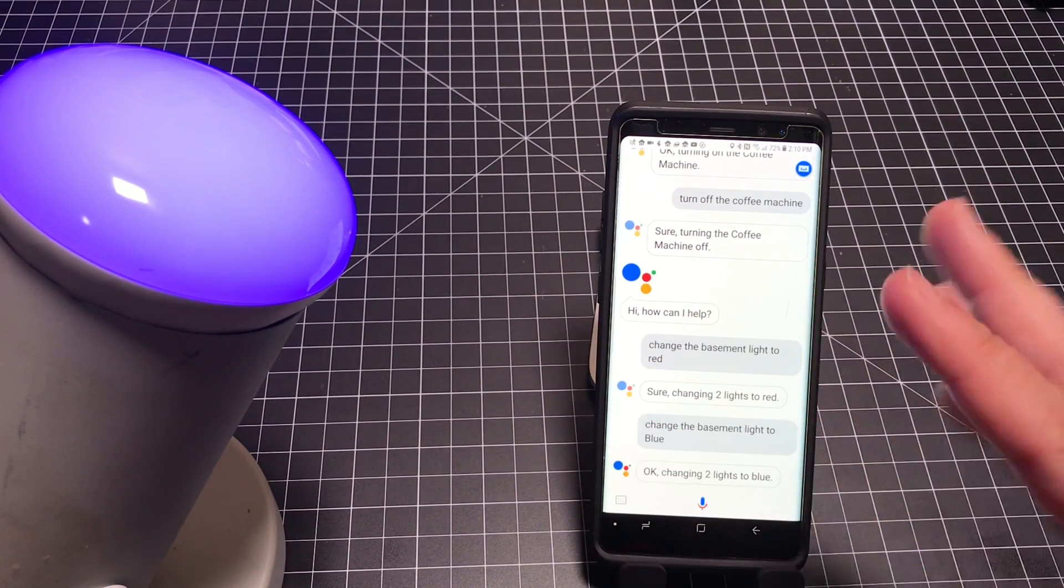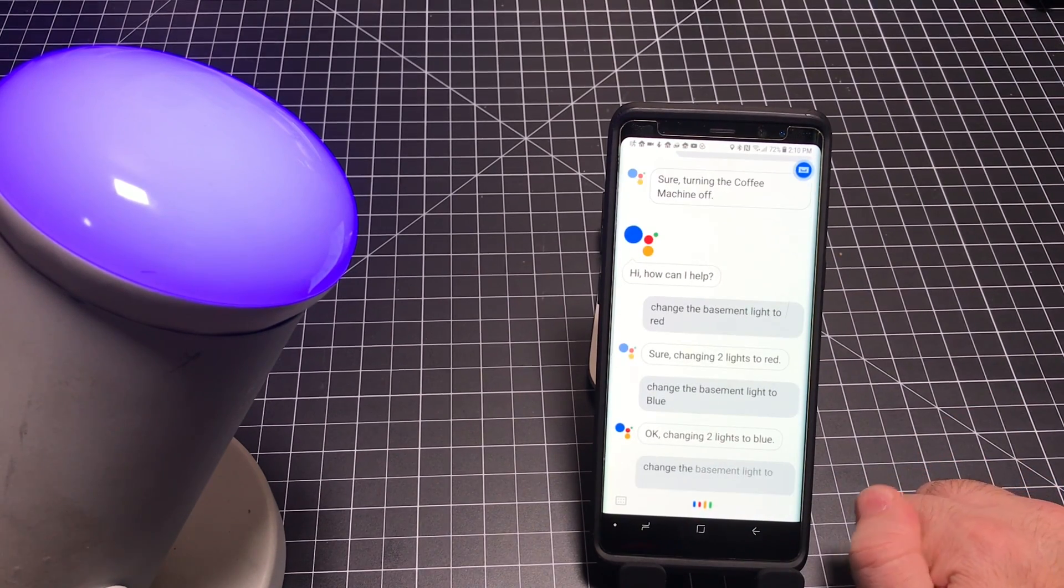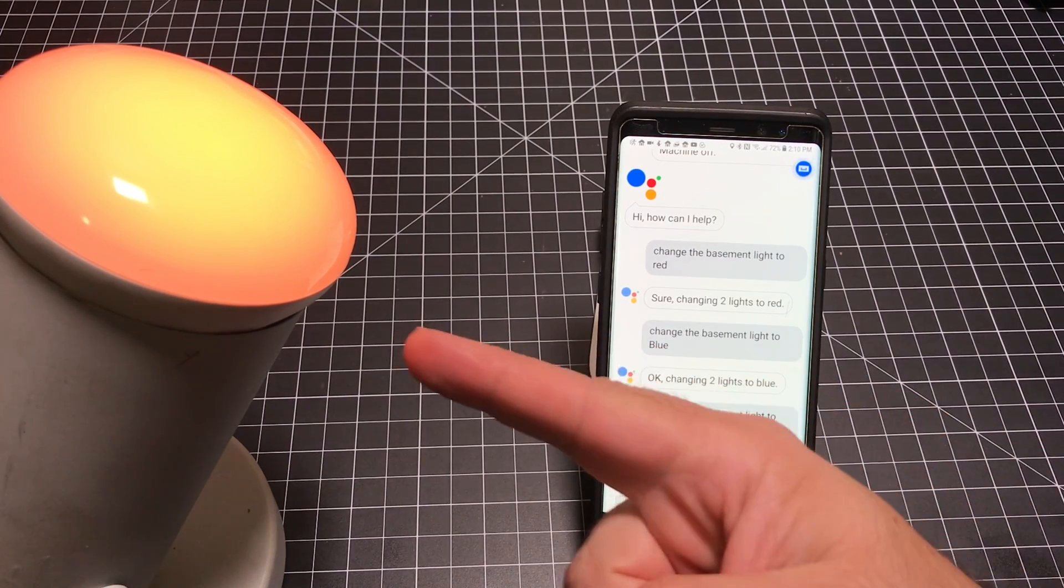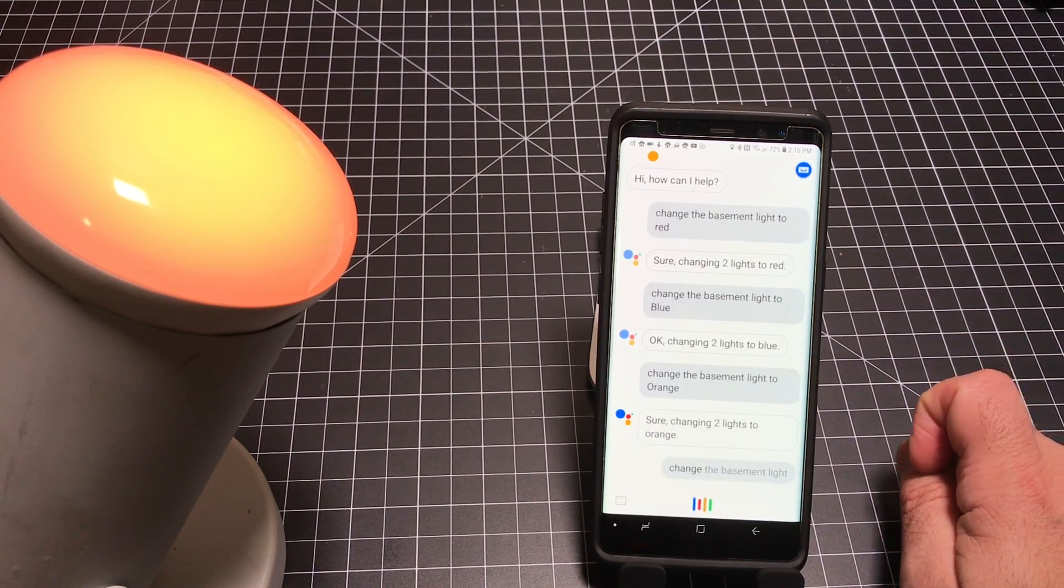And remember, I have two lights, so both of them are changing. Change the basement light to orange.